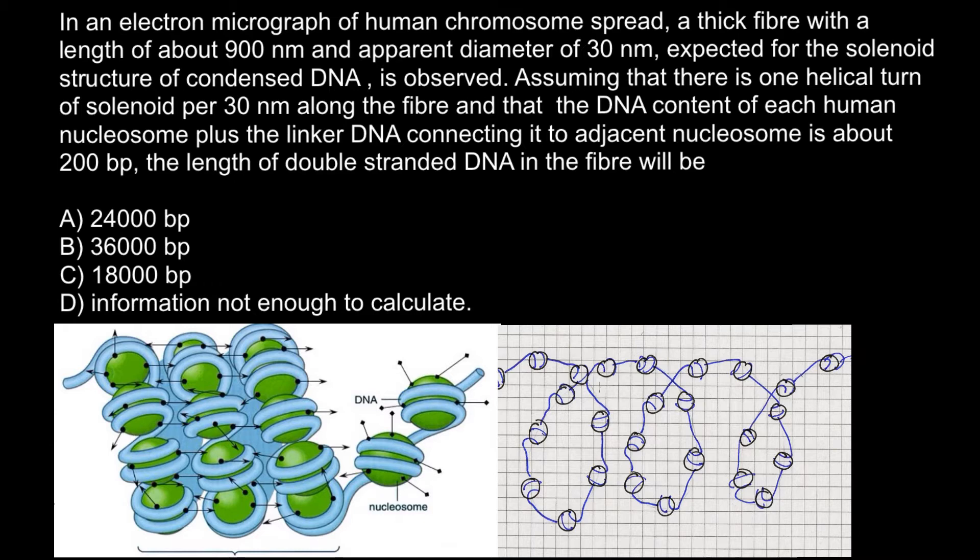So why this problem cannot be solved: because here we are not told how many nucleosomes we have per one ring, per one turn of this structure. But if you would do research, you would find that in one such turn of this structure we would have six nucleosomes. So this information is missing in this problem. And now we can solve this problem very easily. But before I will tell you all the numbers—it's so easy that we even don't have to do any calculations, or we can do our calculations in our mind.